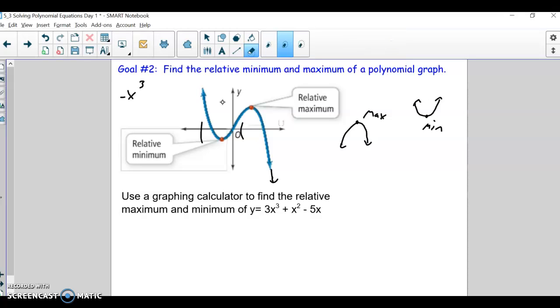In a similar way, we don't have an overall max because it goes forever and ever up on this side. But relative to the points around it, this is the max.